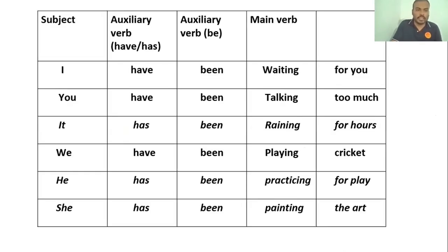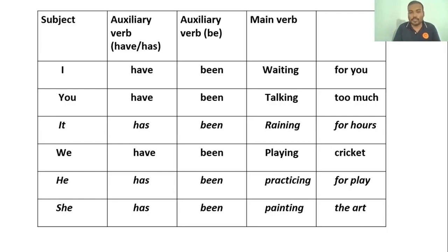Let's go through some examples. 'I have been waiting for you' — 'I' is plural, so we use 'have.' It means the person started waiting earlier and is still waiting. 'You have been talking too much' — started talking earlier and still talking. 'It has been raining for hours' — raining started earlier and it is still raining. 'We have been playing cricket' — we can understand this in two ways: we were playing cricket earlier and stopped recently, or we are still playing.